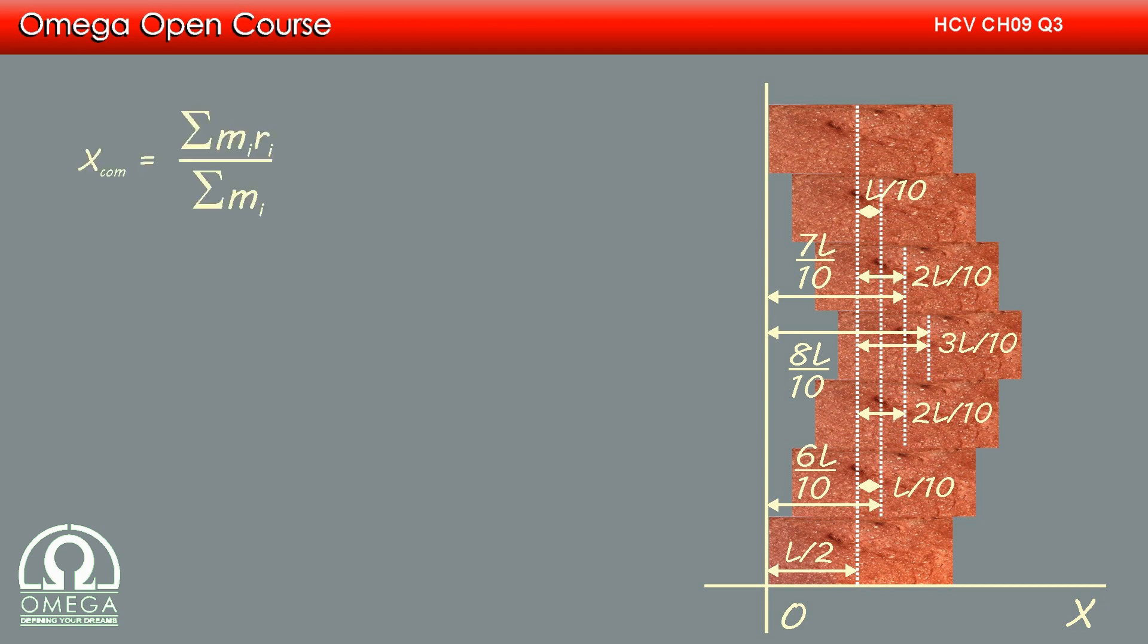Now, the position of center of mass is given by summation of mass into distance divided by summation of mass. Since the center of mass of the two bricks is at a distance of L by 2, product of their mass and distance is m into L.